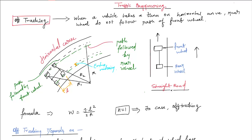The definition of off-tracking: when a vehicle takes a turn on a horizontal curve, the rear wheels do not follow the path of the front wheels.